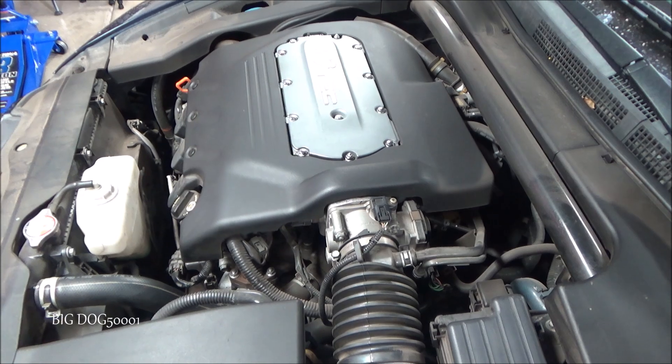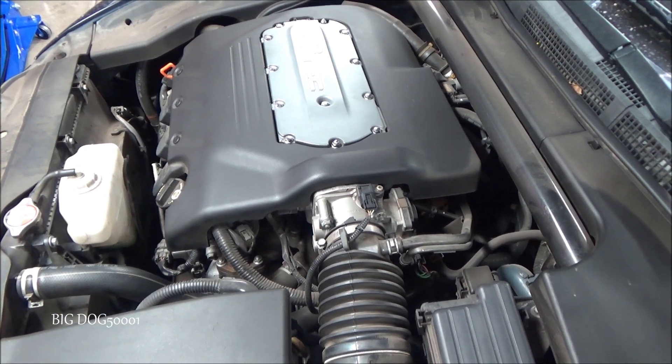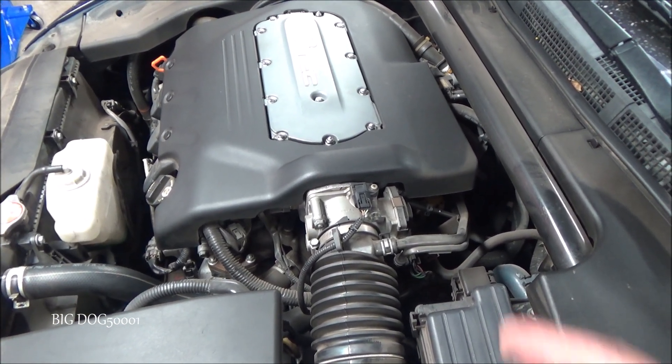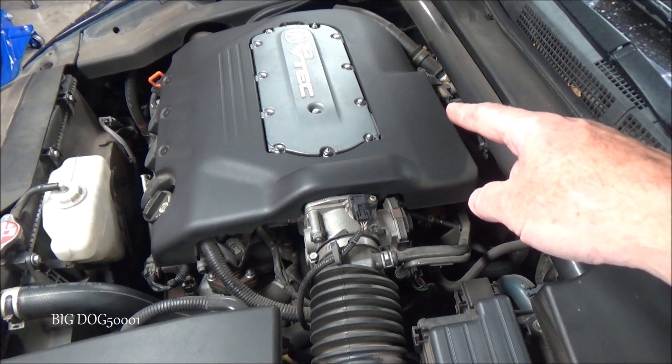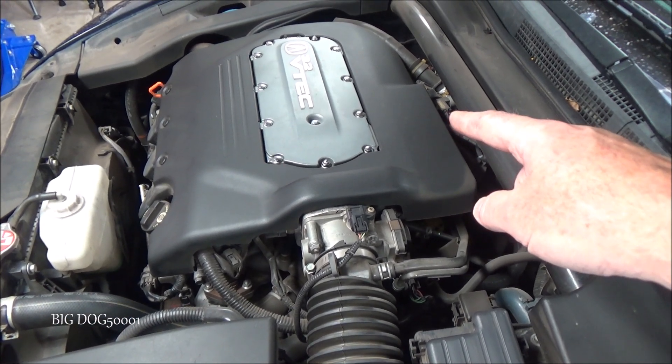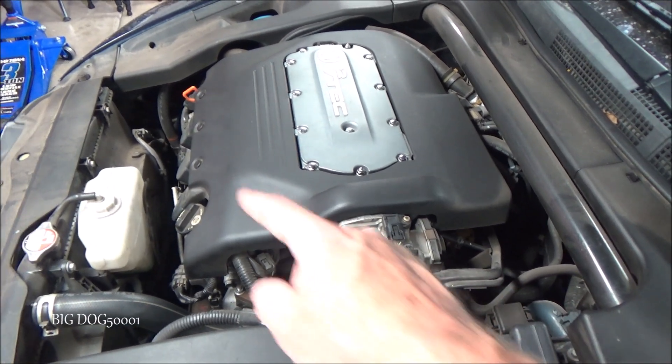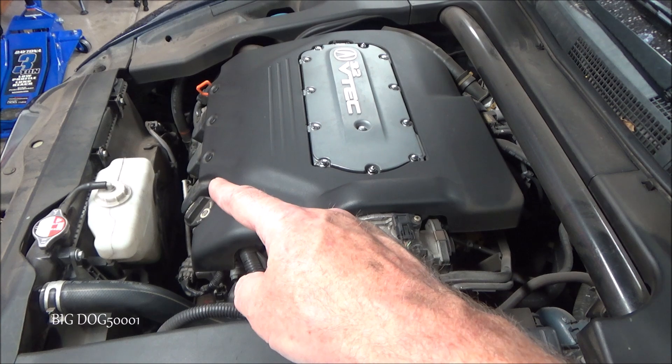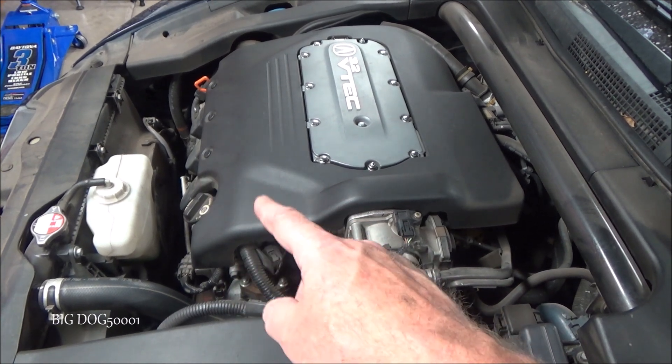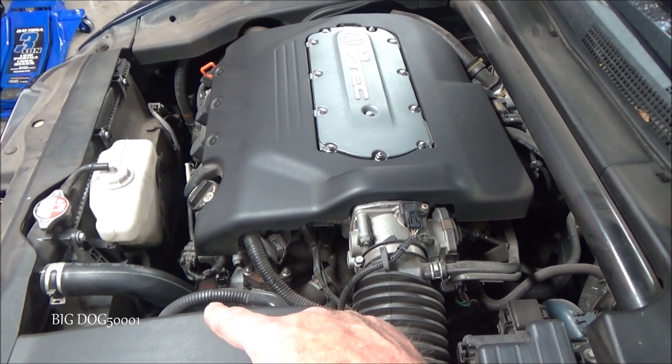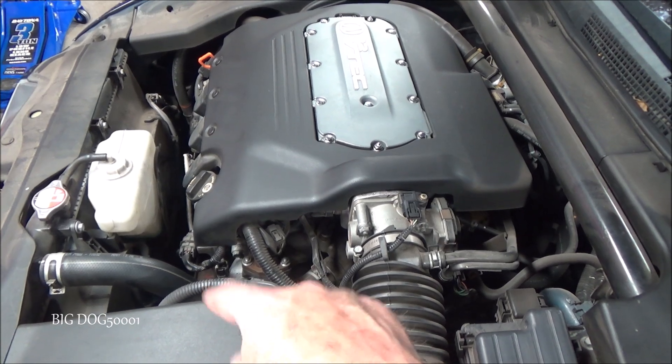So this vehicle has four oxygen sensors and each one of them can set a different code for a slow response. Bank one sensor one for slow response would be P0133. Bank one sensor two for slow response would be P0139. Bank two sensor one for slow response would be P0153. And bank two sensor two for slow response would be P0159. Of course that's what we have.